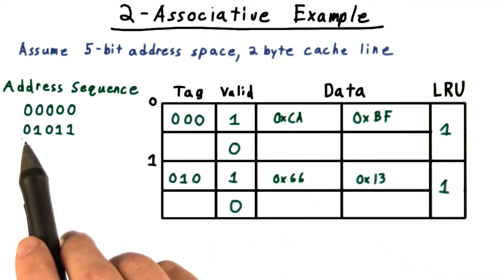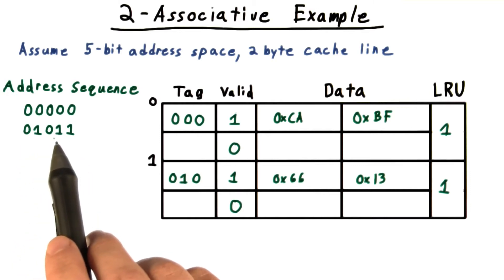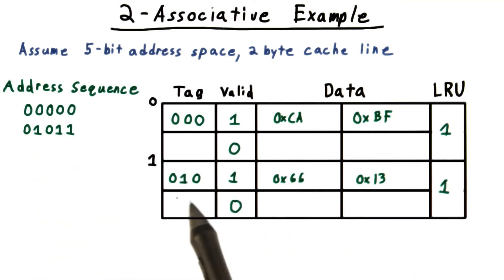Maybe after this, I have an address that looks like this one. The index here is one, so we want to put it in this group. And again, I'll put it in the first line, setting the valid bit, writing the data.